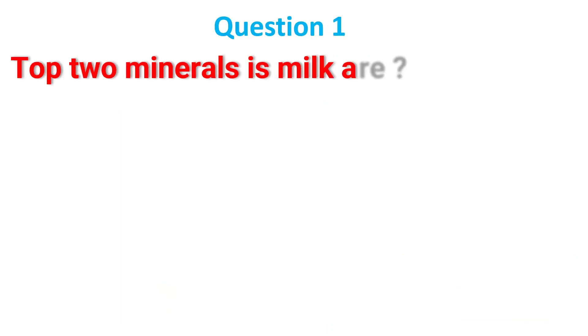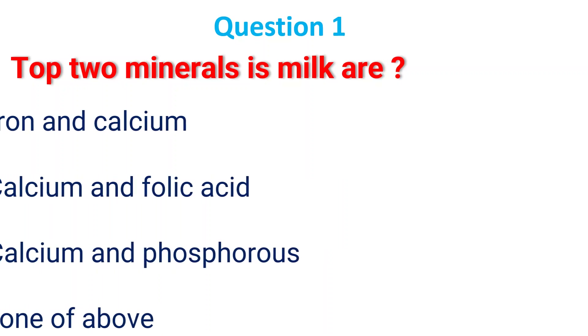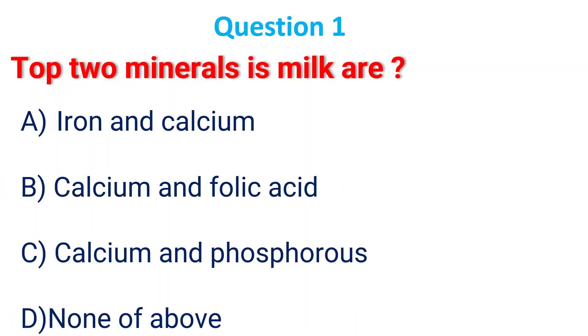Top two minerals in milk are: A. Iron, calcium; B. Calcium and folic acid; C. Calcium and phosphorus; D. None of the above. The answer is C, calcium and phosphorus.